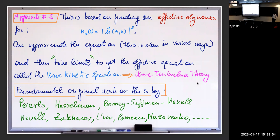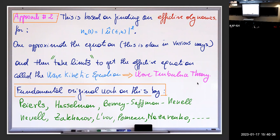This wave kinetic equation is very important. The first places where you can see its derivation and formulation are in the work of Peierls and Hasselmann — who got a Nobel Prize a couple of years ago in physics for his study of climate. You can already start seeing what will turn out to be Feynman diagrams attached to this. Nazarenko has a book on this, which is where I learned the derivation from.